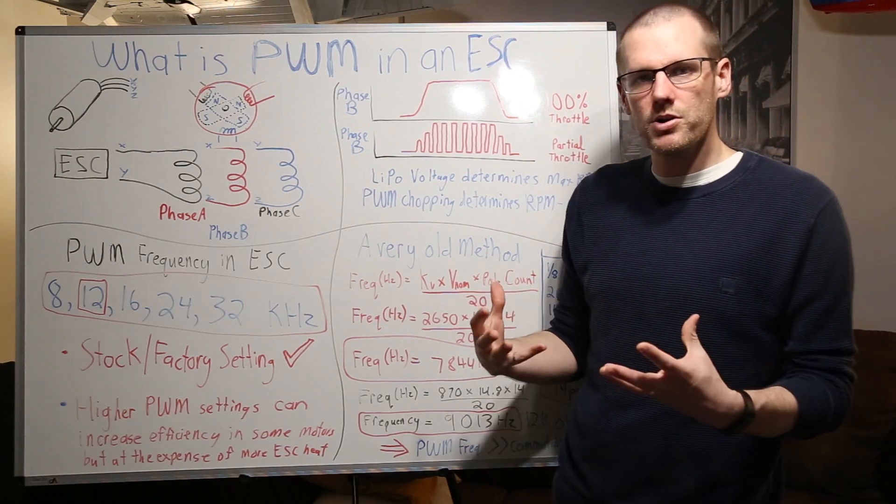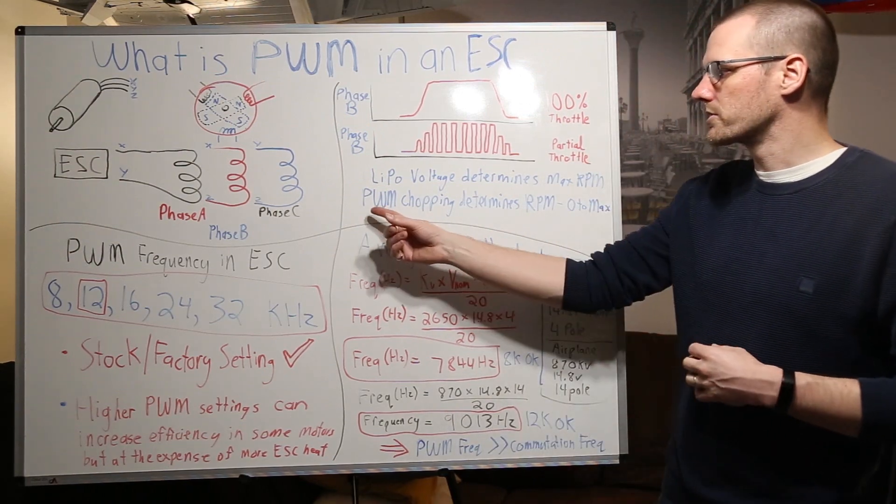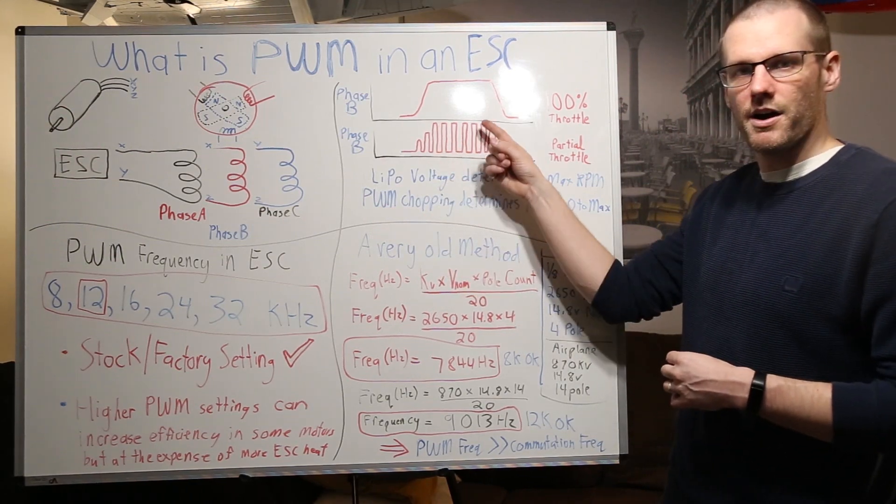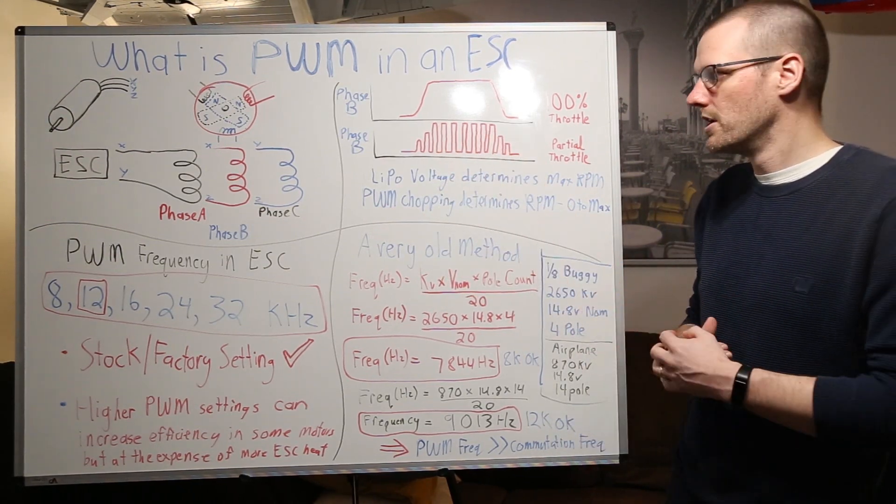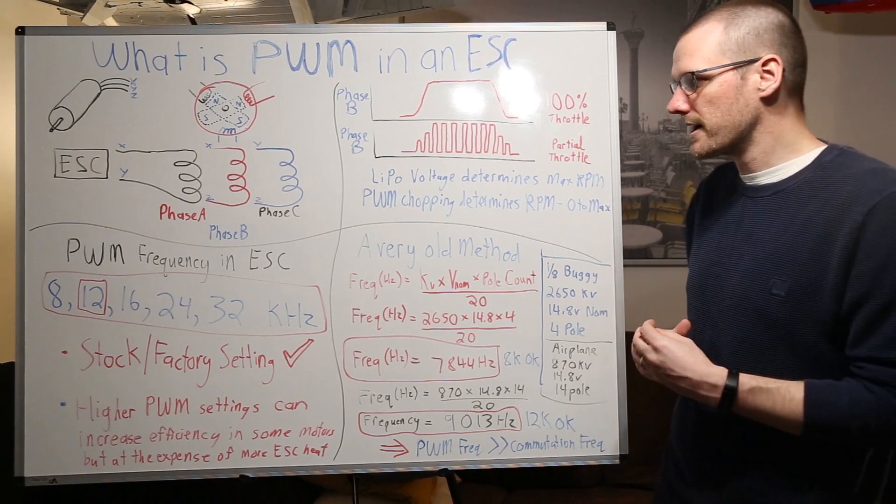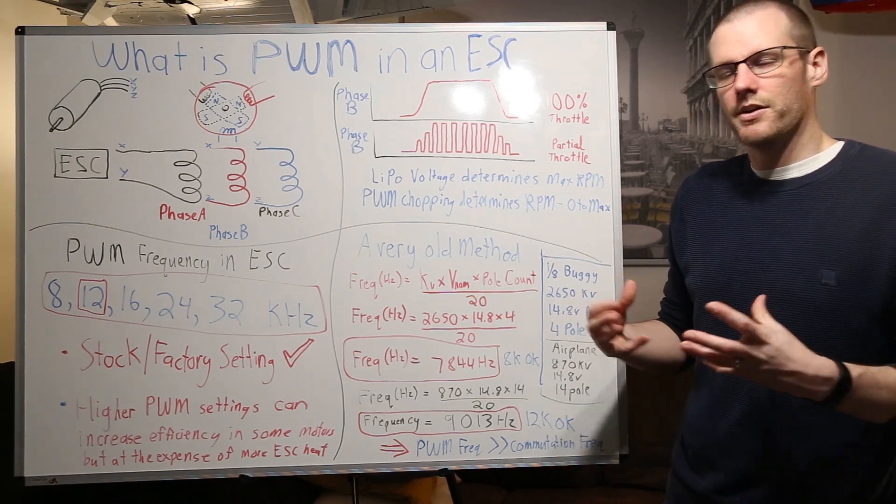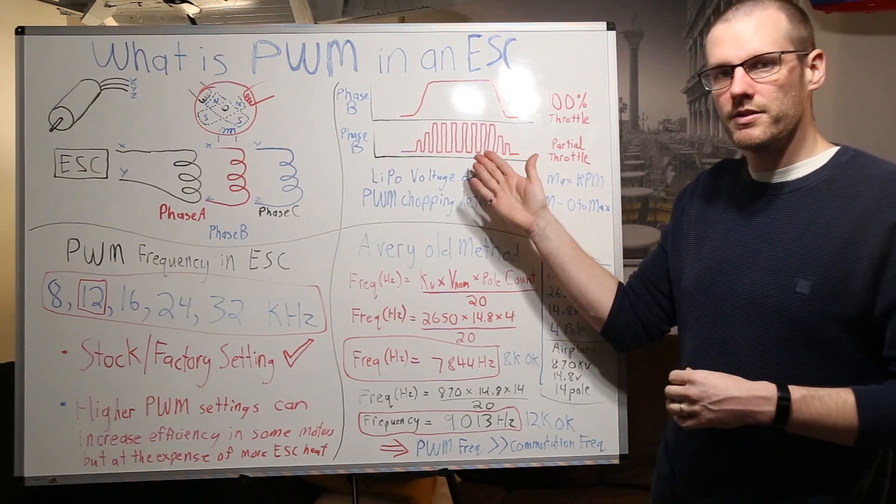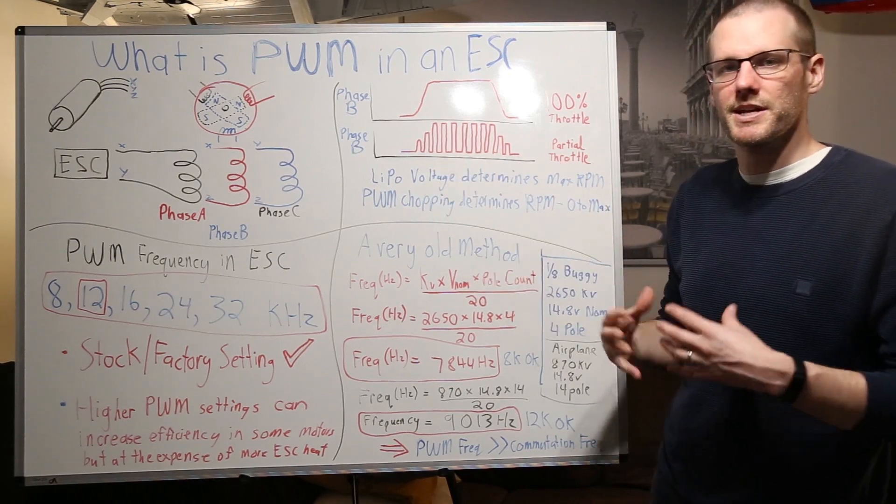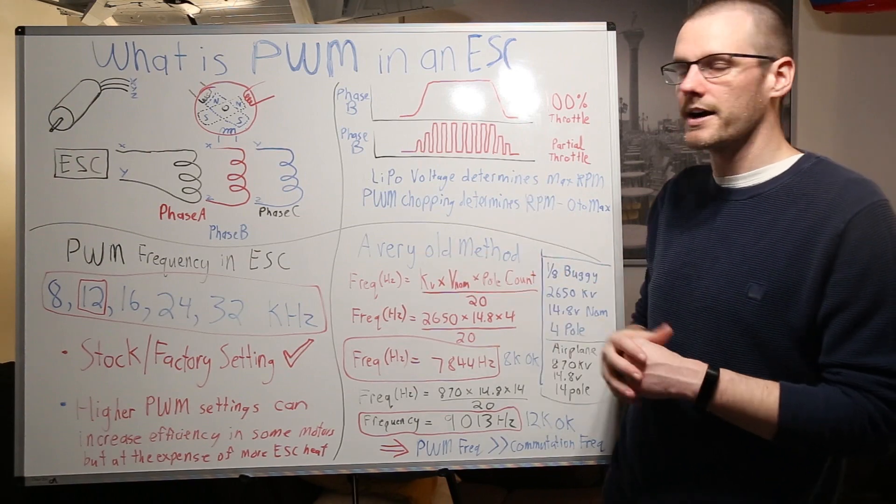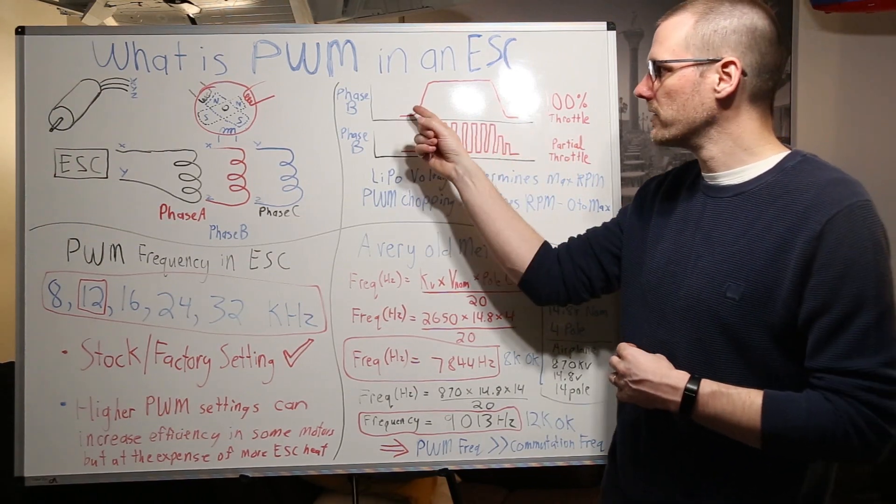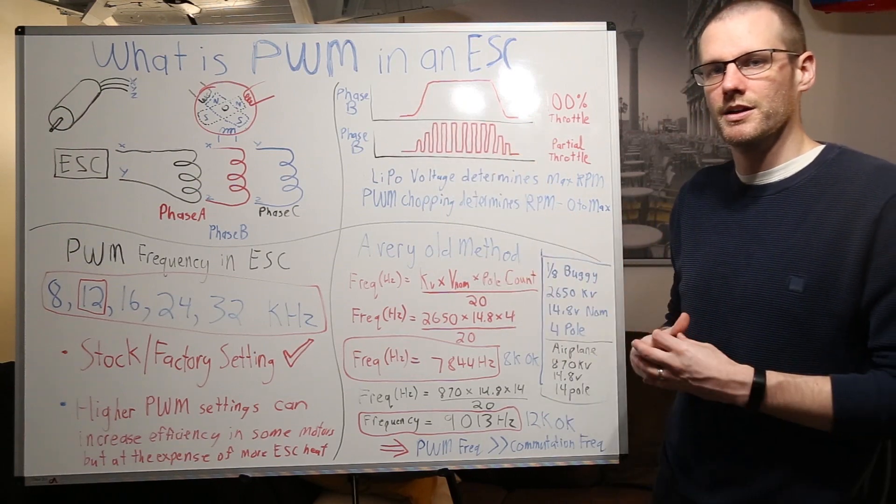However if we're going partial throttle what we're going to want to do is what's called PWM chopping where we actually turn on and off and on and off and on and off multiple times within a second. In fact it's on the level of kilohertz that we're actually turning this on and off. This partial throttle PWM function happens at a very high rate that we'll talk about in the next slide.